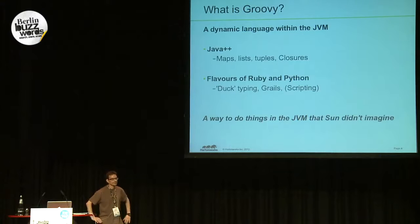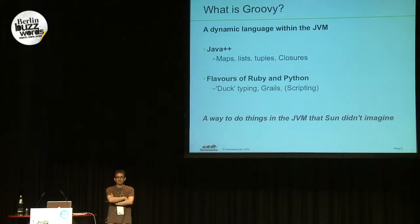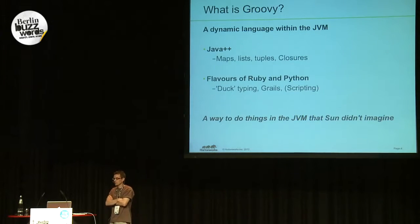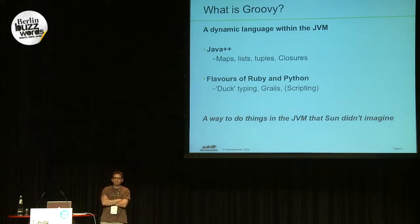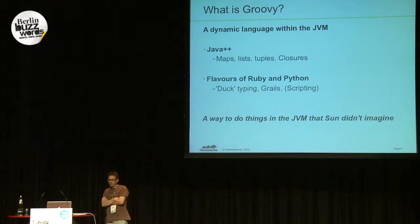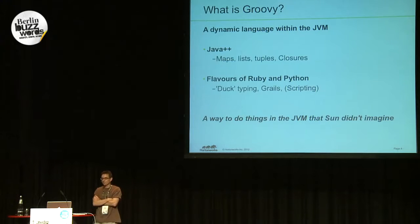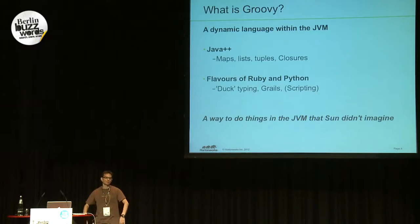What is Groovy? I like to view it as kind of Java++. They've fixed some of the things that have been left out of Java, like maps, lists, tuples, closures. They've also stolen bits from Ruby and Python — some of the syntax, some of the concepts. They've also thrown away some bits, and that can really hurt you. But the point is that it runs in the JVM, but it lets you do things that Java would never let you do before.